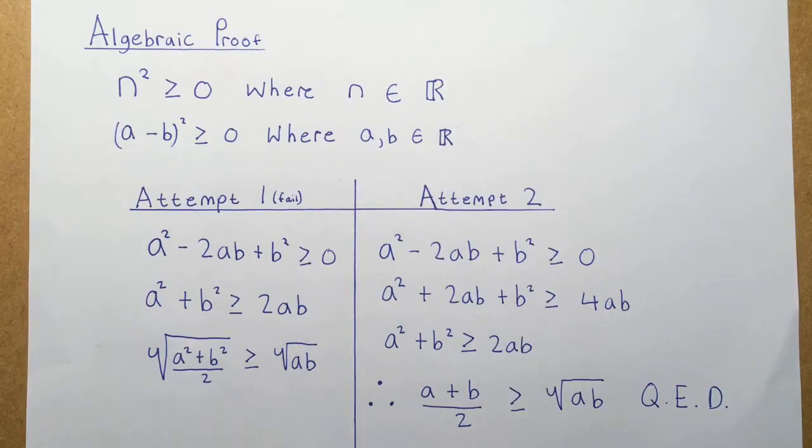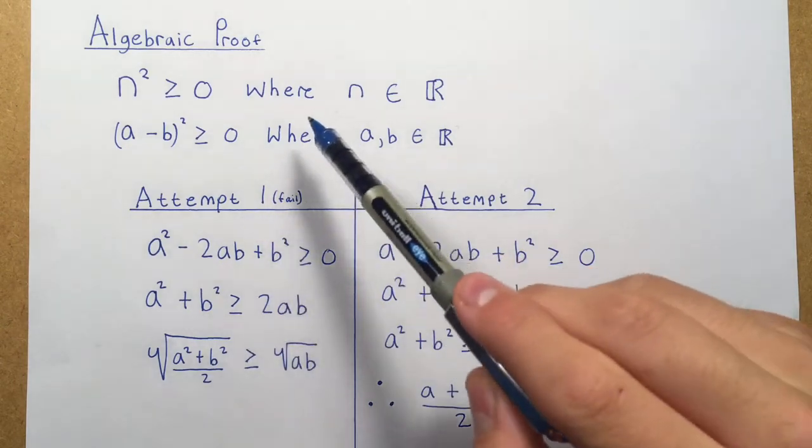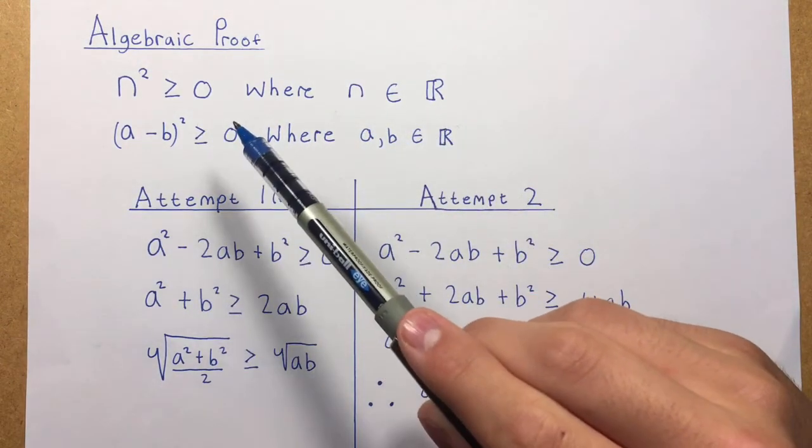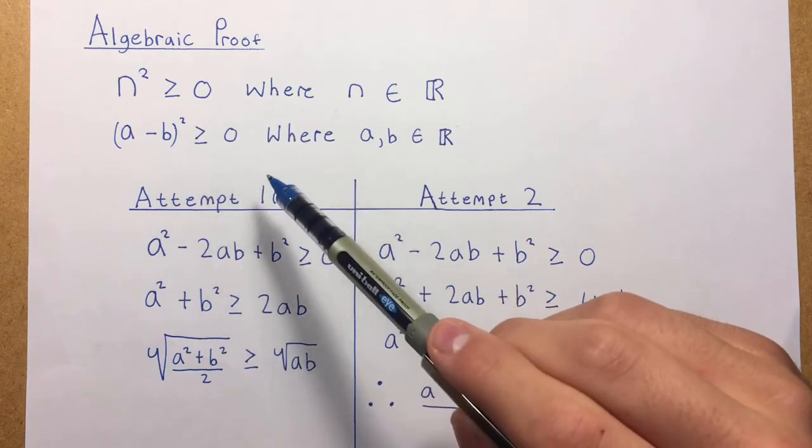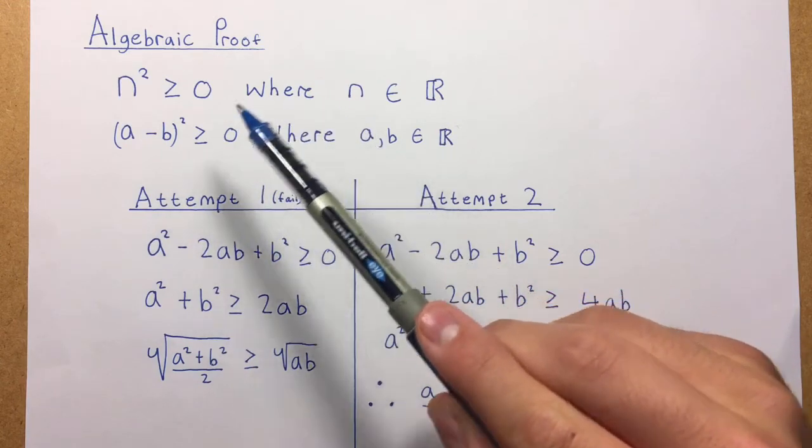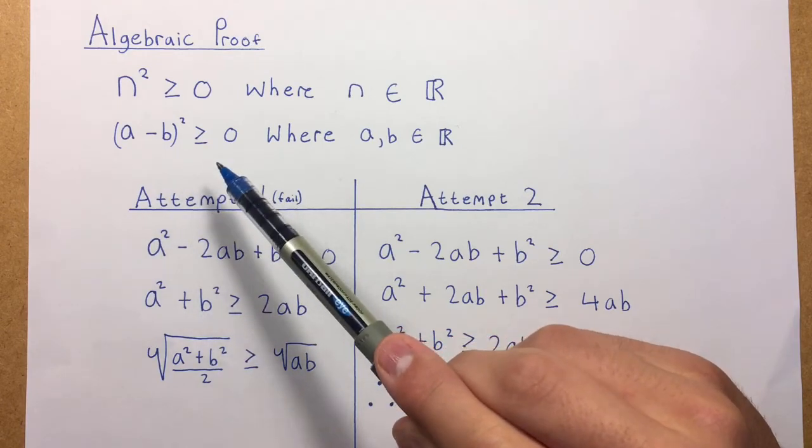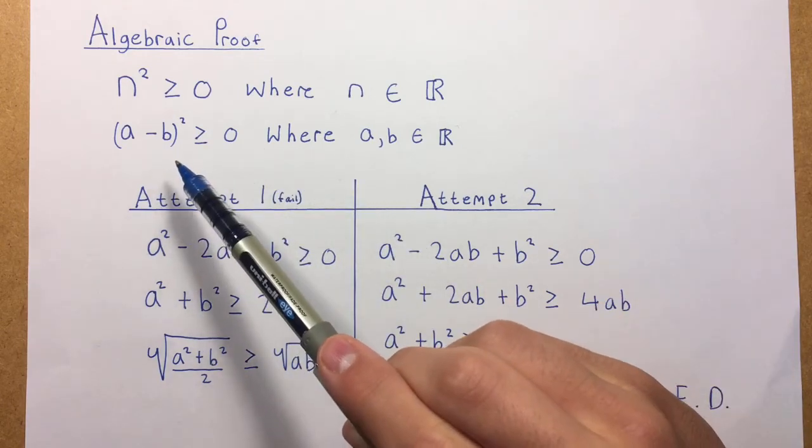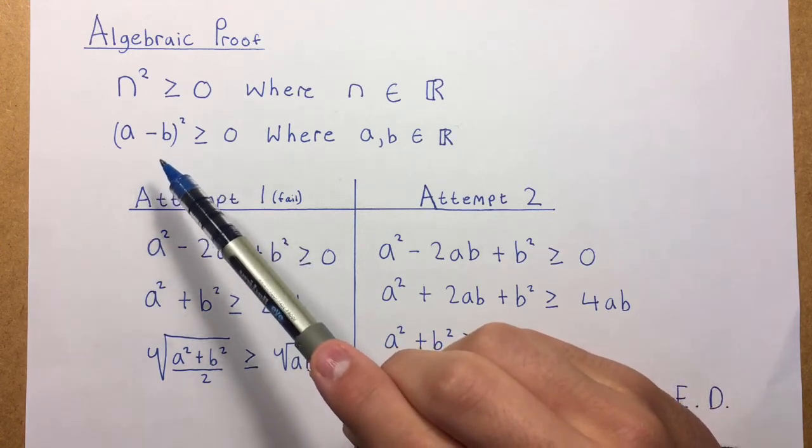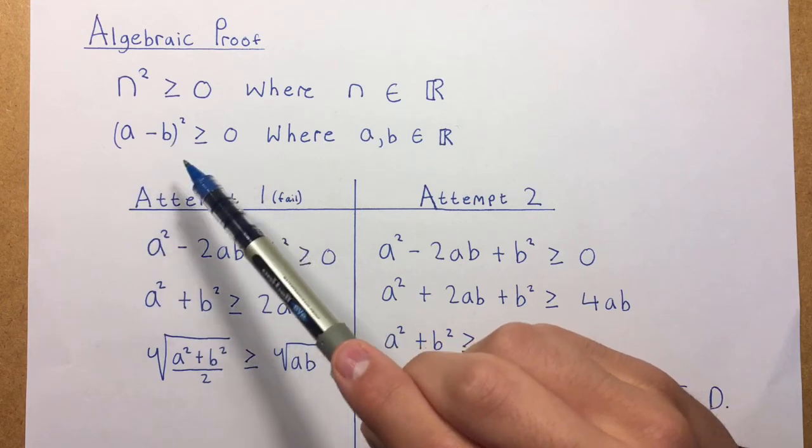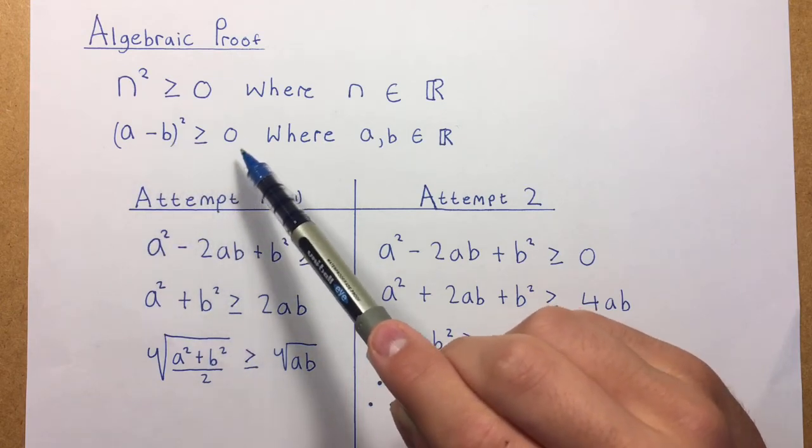So this next proof of the AM-GM inequality is an algebraic one. To start off with, we know that for any integer n, which is a member of the real numbers, n squared must be greater than or equal to zero. It's just a basic rule of arithmetic. And we can apply this same fact by taking two real numbers, a and b, and subtracting b from a, and when we square that, that will also give an answer greater than or equal to zero.